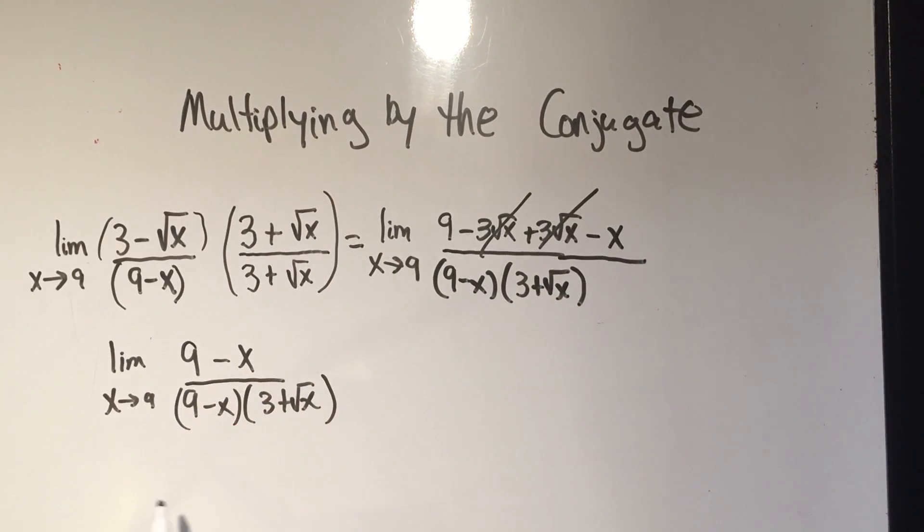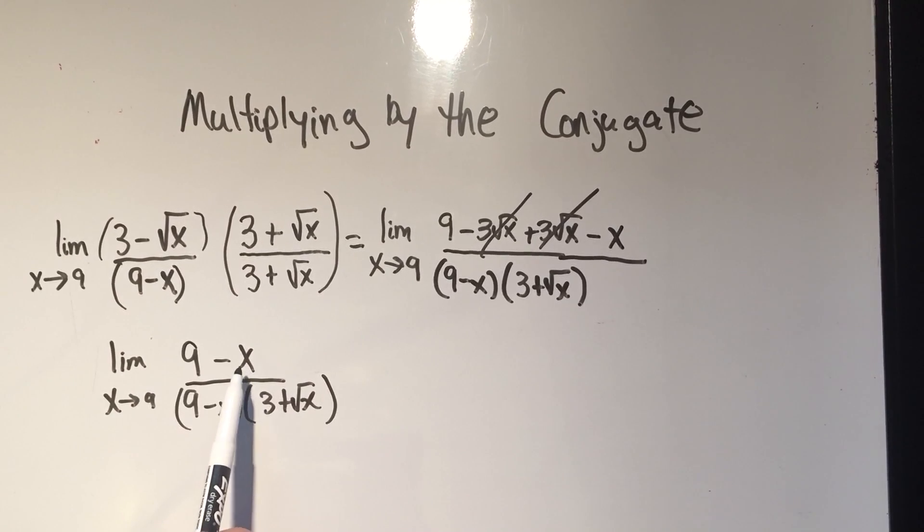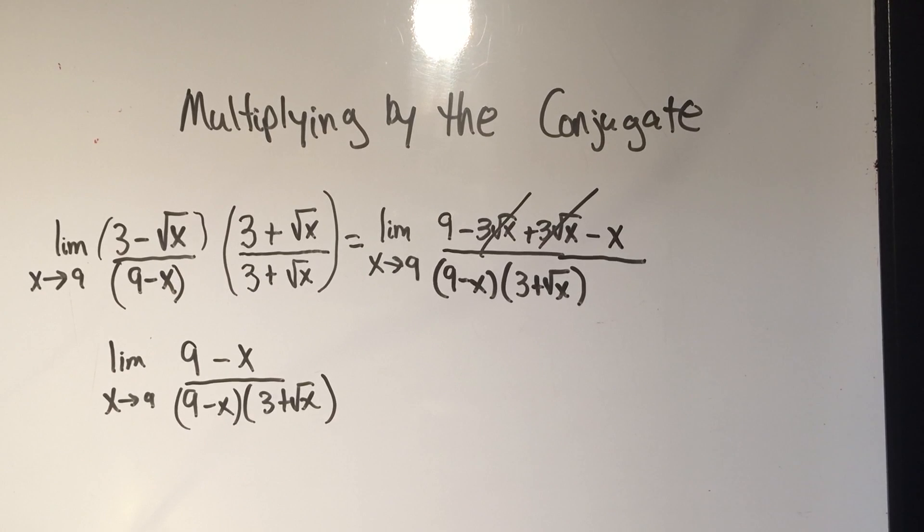Most of the time what people do is they just square the first one, 3 squared is 9, minus square the second one, square root of x squared is x. And that's what I would recommend that you do too.